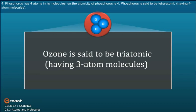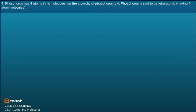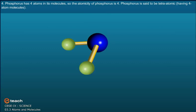Phosphorus, P4, has four atoms in its molecules. So the atomicity of phosphorus is four. Phosphorus is said to be tetraatomic, having four atom molecules.